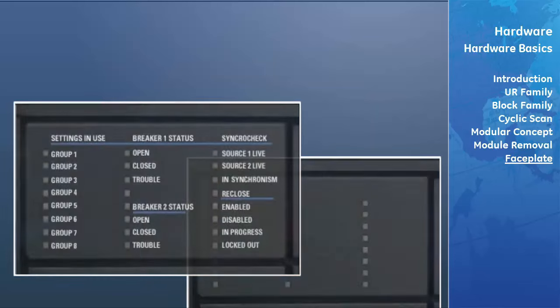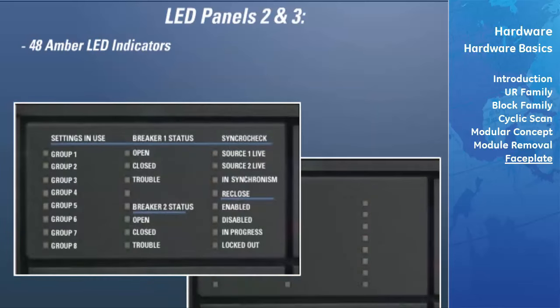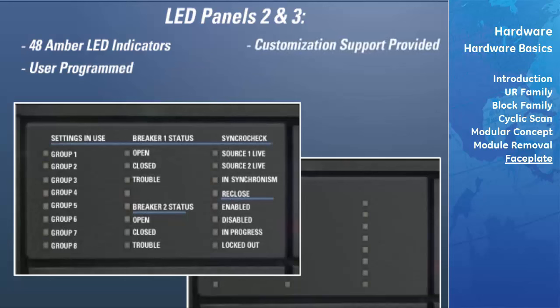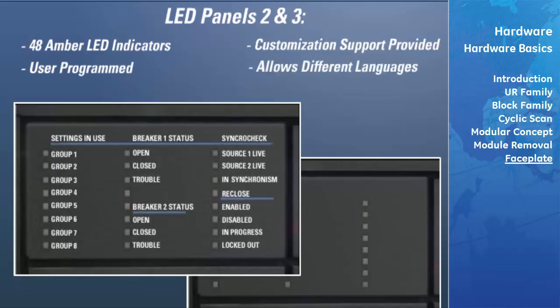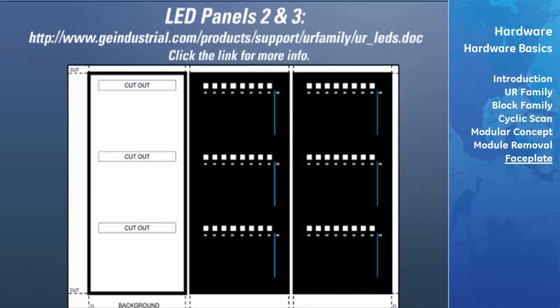Panels 2 and 3 provide 48 amber LED indicators whose operation is programmed by the user. Support for applying a customized label beside every LED is also provided. User customization of LED operation is of maximum benefit in installations where languages other than English are used to communicate with operators. If you are interested in customizing the LED labeling, visit the provided URL and download the zip file, which includes templates and instructions for creating appropriate labeling for the LED panel.